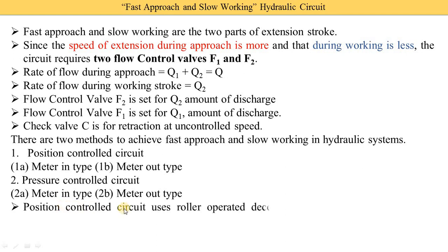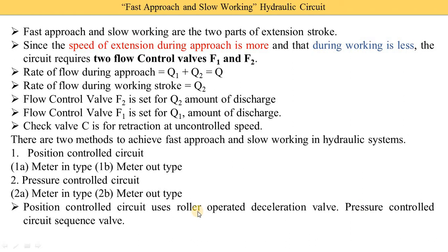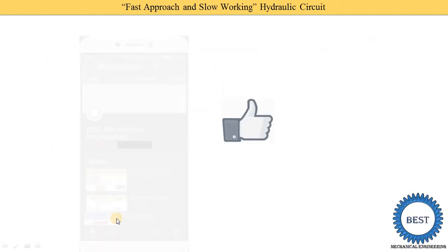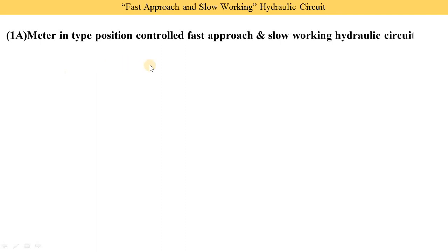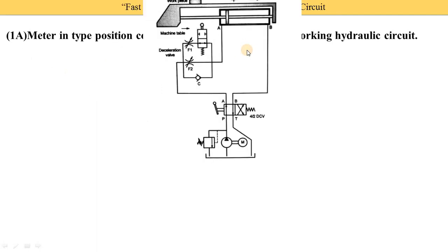The position control circuit uses a roller-operated deceleration valve, and the pressure control circuit uses a sequence valve. Please like the video and subscribe to the channel for more videos related to hydraulics and other mechanical engineering subjects. All hydraulics video links are provided in the description and on cards; for other subjects, please visit the playlist. Now I will explain the meter-in type position control fast approach and slow working hydraulic circuit.